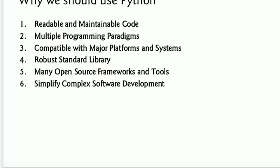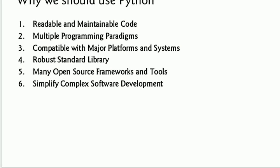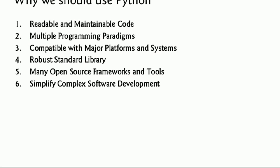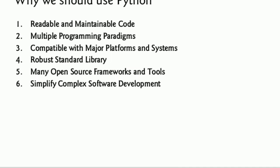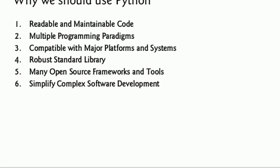Python code has multiple programming paradigms. It is compatible with major platforms and systems. It has a robust standard library, and many open source frameworks and tools that simplify complex software development. When you work with Python, you will find standard library functions that make things very easy. There are open source frameworks like Django for web development and Pygame for game development.